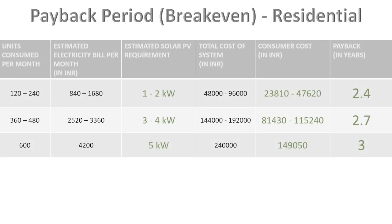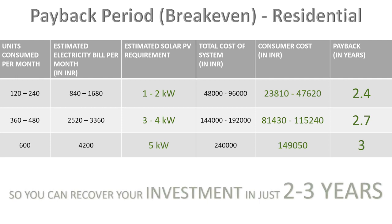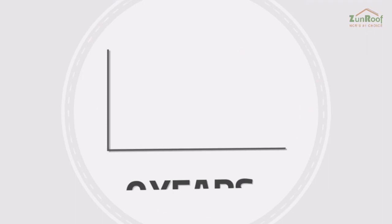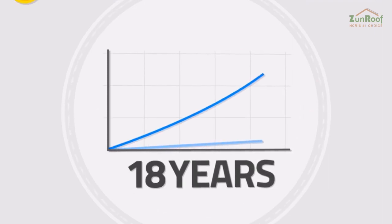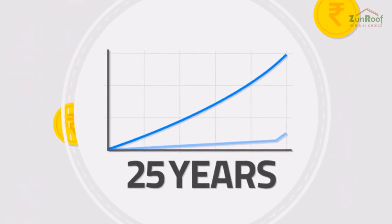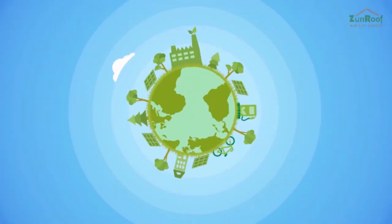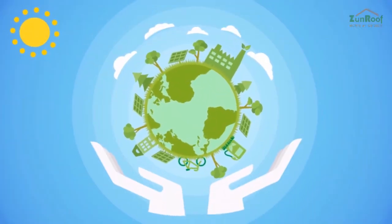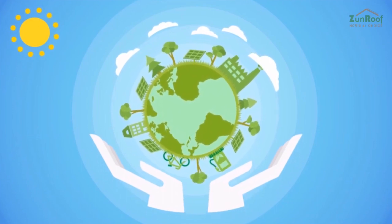If you consume 120 to 240 units per month, a 1 to 2 kilowatt solar photovoltaic system will be required, costing around 25,000 to 50,000 rupees with a payback period of just 2.4 years. For a system up to 5 kilowatts, you can recover your investment in just 2 to 3 years. Invest in a solar rooftop system today, earn higher returns than other investments, save on electricity bills for the next 25 years, and protect the environment.